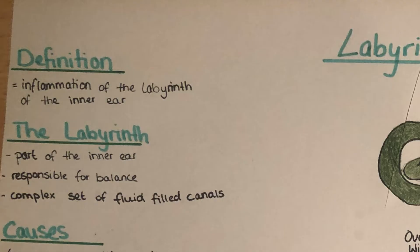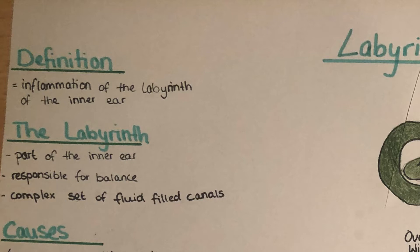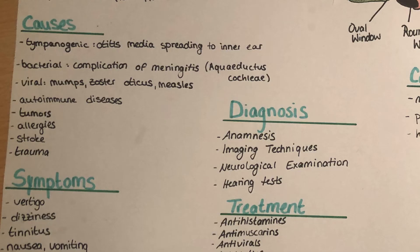It is the part responsible for balance and it consists of a complex set of fluid-filled canals. These canals are in different planes and when the head moves side to side, up and down, or in a tilting movement, the fluid inside these canals moves and signals the brain via the eighth cranial nerve that there is a movement of the head. This is important for proprioception, coordination, and any other kind of movement.